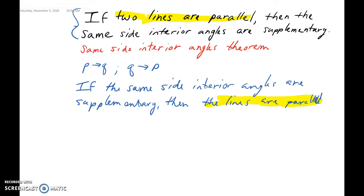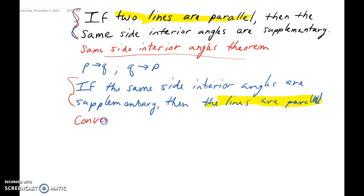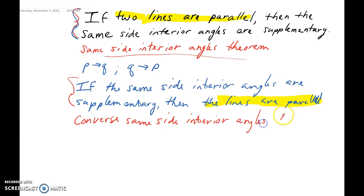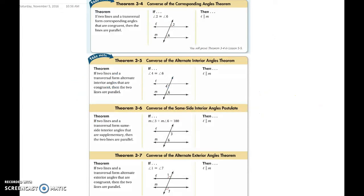Our name for this is very simple. Think about what we did from the first one — we were given our same side interior angles theorem, and all we did to create this new statement was take the converse. So our name for this is the converse of the same side interior angles theorem. There are a few more things we're going to talk about in this video.